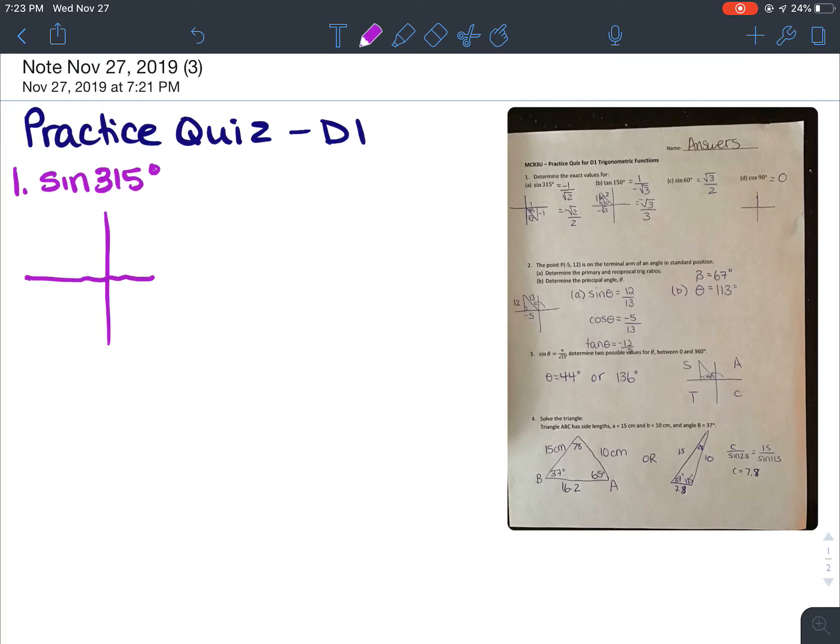If you're going to plot that on your grid, your initial arm is here at 0 degrees. Then you have 90, 180, 270, and back to 360.